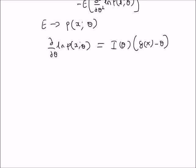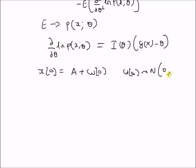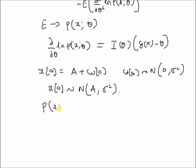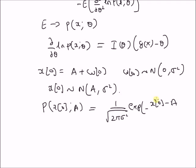Now, we want to look at an example illustrating this theorem. Consider a case where we have an observation x(0) = a + w(0), where w(0) has white Gaussian structure — that is, it follows a normal distribution with mean 0 and variance sigma-squared. Then the observation x(0) also follows a normal distribution with mean a and variance sigma-squared. Therefore, the likelihood function p(x(0); a) is defined as (1 / sqrt(2*pi*sigma-squared)) * exp(-(x(0) - a)^2 / (2*sigma-squared)).